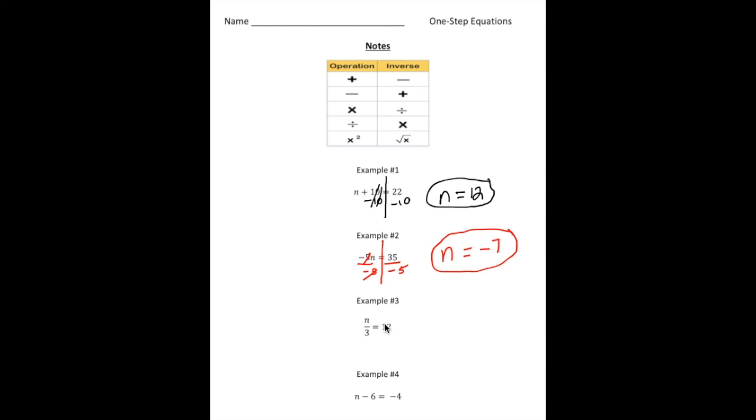Example number three, we have a number divided by 3 equals 12. Now again, notice, the inverse of division is multiplication. So we're going to multiply both sides by 3. Again, here's going to be our midpoint.